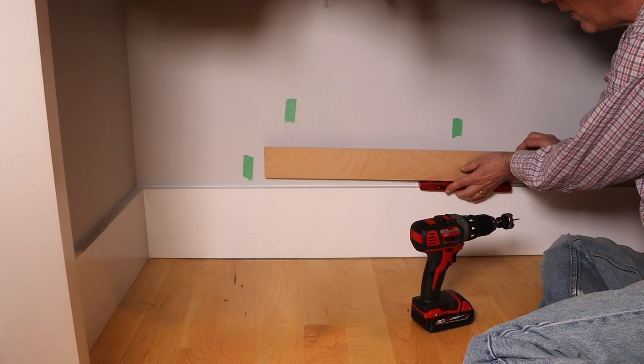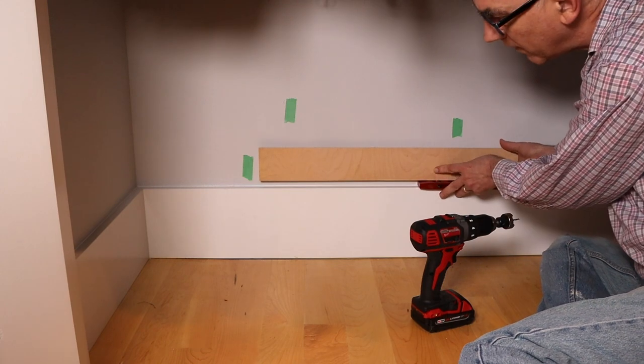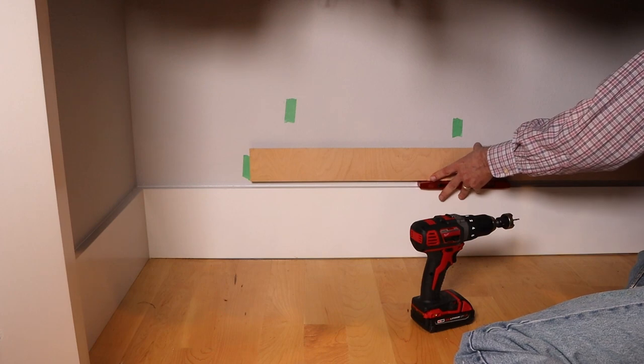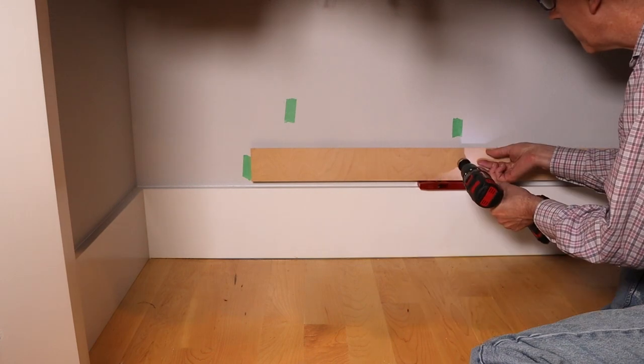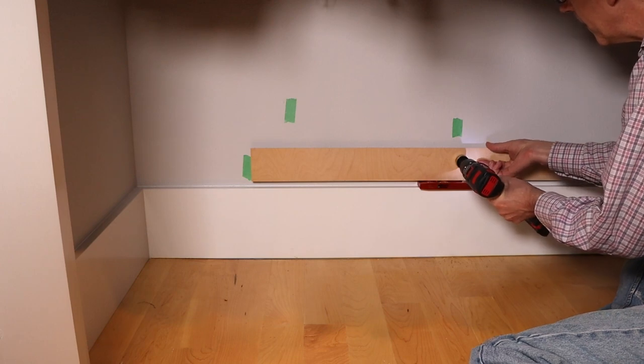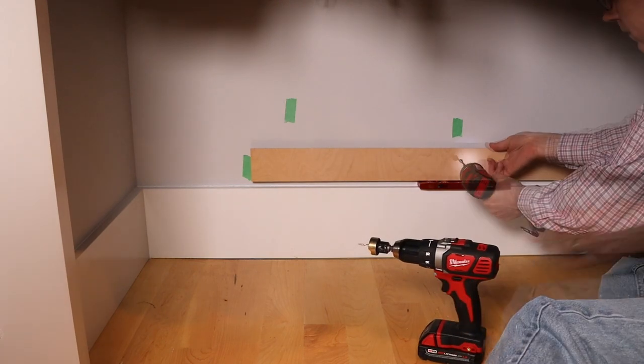I needed a bit of a space between the baseboard and the bottom of the French cleat. It turns out my small level was just about the right thickness for this. I started with the center screw so that if this wasn't quite level I could pivot it around the center screw.